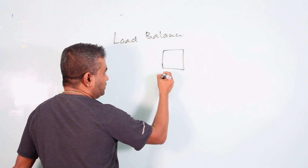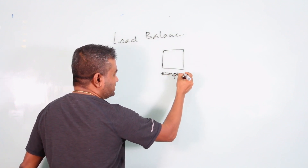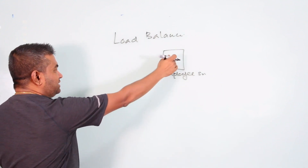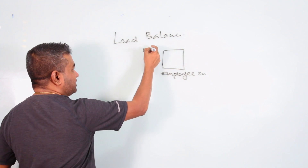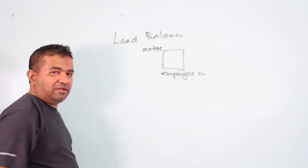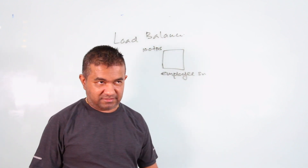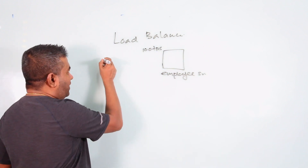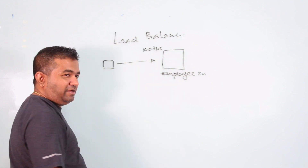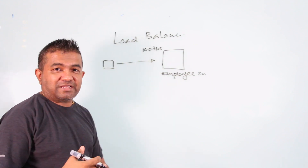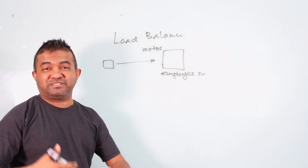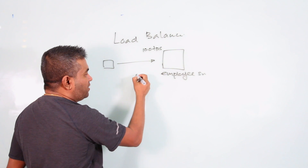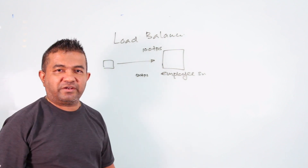Let's say you have an employee service. This service can handle 100 TPS — transactions per second. It's working well, no problem. But now something came up, like a pandemic, and you need to handle 500 TPS — 500 transactions per second. That means you get a high load.